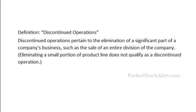Today we're looking at the definition of discontinued operations as we do in each one of these fundamental analysis tutorial videos. I'll give you the actual definition and then we'll look at some examples and see if I can't give you a little bit more insight. Discontinued operations pertain to the elimination of a significant part of a company's business, such as the sale of an entire division of the company.